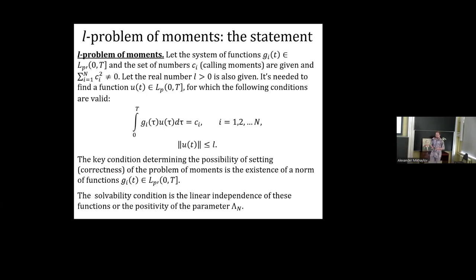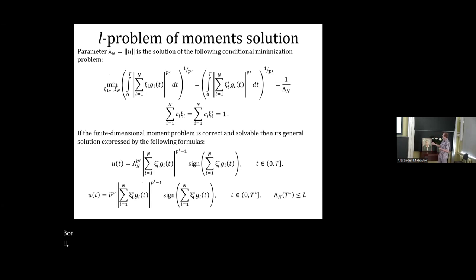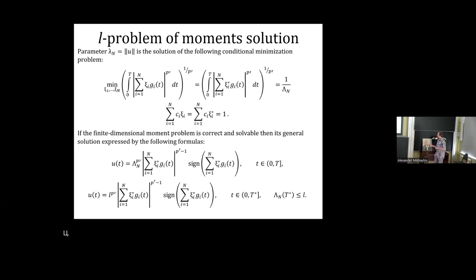For fractional-order systems, the correctness condition is more important, and if we prove correctness, then solvability of the L-problem of moments is automatically guaranteed. The parameter lambda_n can be calculated from the solution of a conditional minimization problem. If we prove the correctness and solvability of the L-problem of moments, we can construct an analytical solution with explicit expressions for the function u — applicable both for constructing a function with minimal norm at a given control time, and for constructing a function with a given norm restriction.